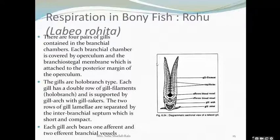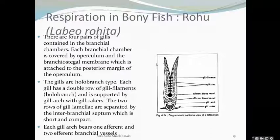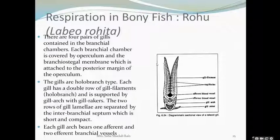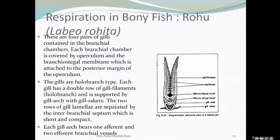When the water is efficiently spread over all the gill slits, it moves outside. In the case of the bony fish Labeo rohita, the gills are of the holobranch type — meaning they have a double row of gill filaments called gill lamellae. These lamellae must have support, and they are supported by the gill arc with the gill rakers. The gill rakers also help the fish in feeding. The two rows of lamellae are separated by the interbranchial septum, which is short and compact.